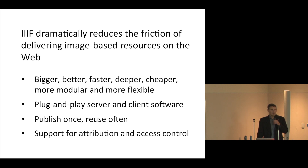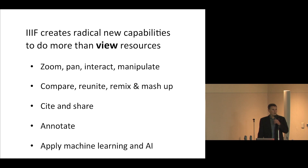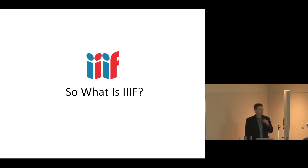Stepping back, I believe IIIF offers two key things to the research community. First, IIIF dramatically reduces the friction of delivering image-based resources on the web — it's faster, easier, more performant, and you can publish your images once and have them used across the entire ecosystem, with support for attribution and access control. Beyond that, IIIF creates radical new capabilities: you can zoom, pan, compare, reunite, mash up, cite, share, annotate, and now apply machine learning and artificial intelligence.